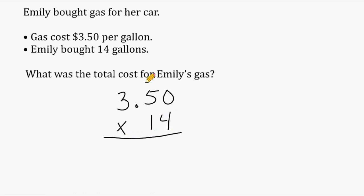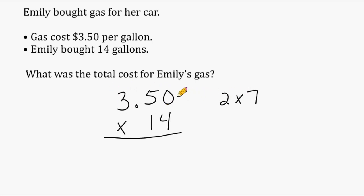I could actually do this problem mentally by understanding that 14 is the same thing as 2 times 7. So I could double $3.50 first, multiplying by 2 to get 7, and then take that answer and multiply it by 7, which would be 49.